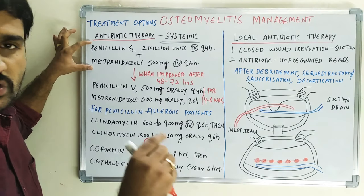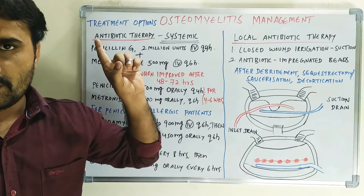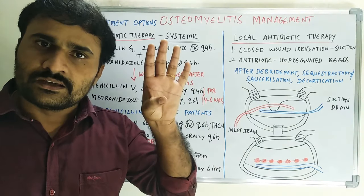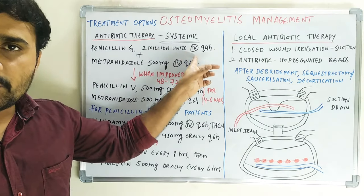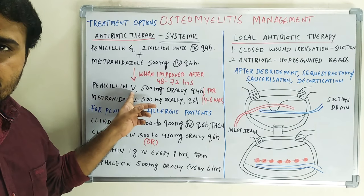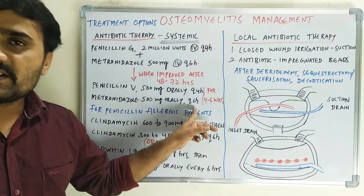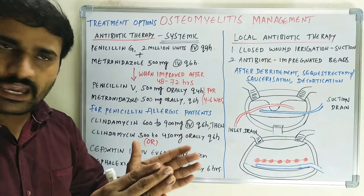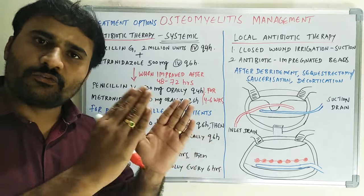This is the most common and initial antibiotic therapy against osteomyelitis. When there is improvement after 48 to 72 hours — approximately 3 days on this regimen — we will shift the intravenous therapy to oral therapy. Orally, the same drugs are used: penicillin V 500 mg every 4 hours and metronidazole 500 mg every 6 hours. Instead of penicillin V, you can use ampicillin or amoxicillin, available in 500 mg doses.